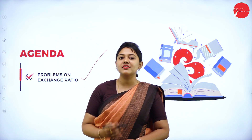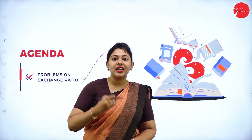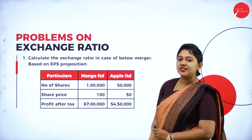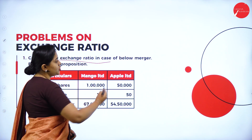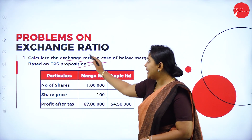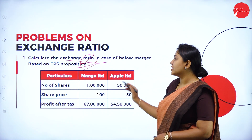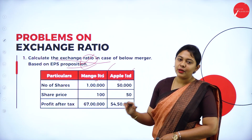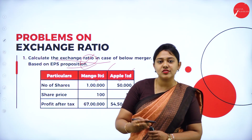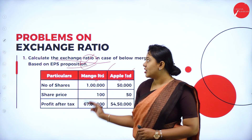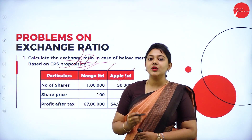My dear students, in the last class we discussed problems on price-to-earnings ratio and the relevant formulas. In today's class, we will take up problems on exchange ratio. The first question asks us to calculate the exchange ratio in a merger based on EPS proportion. A merger has happened between Mango Limited and Apple Limited. Mango Limited is the acquirer company and Apple Limited is the target company. EPS proportion is not given in the question — we need to calculate it.